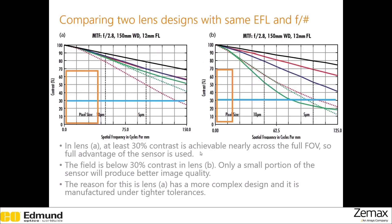Now we will compare the performances of a number of lenses by looking at the MTF curves. The first set of curves have the same focal length and F-number. This light blue line shows that at least 30% contrast can be achieved nearly across the whole field of view, meaning the full advantage of the sensor is used. But in lens B this is not the case — 30% contrast is achieved only up to a limited spatial frequency, so image quality will be worse. The reason is that the first lens has a more complex design and is built under tight manufacturing tolerances.